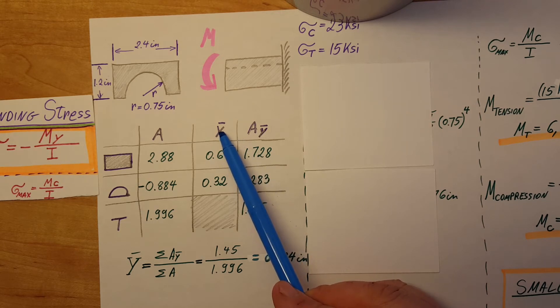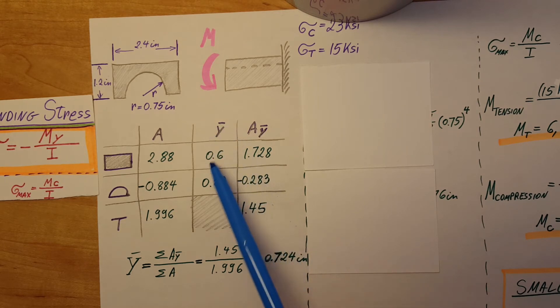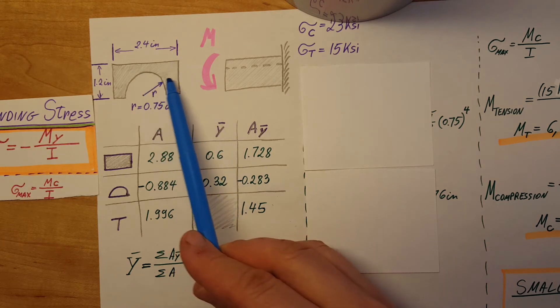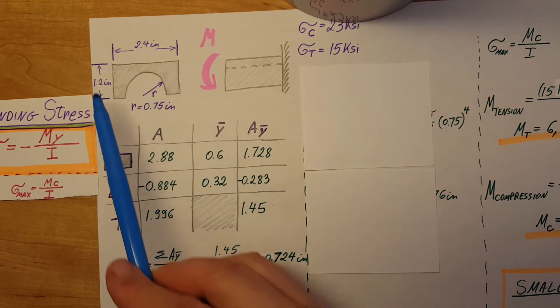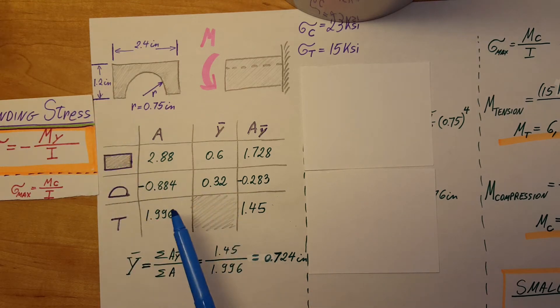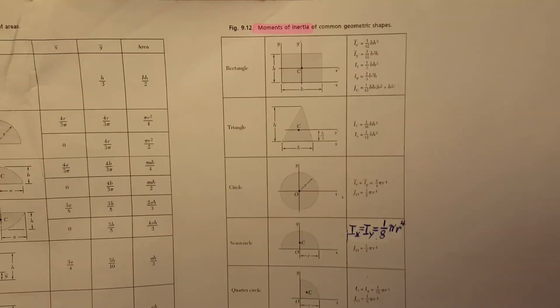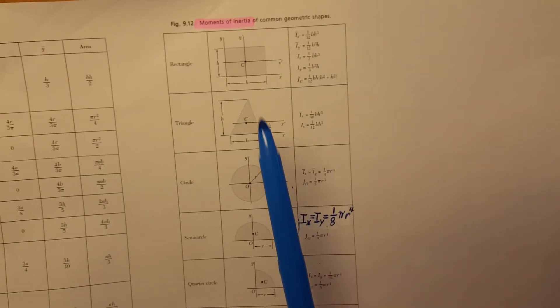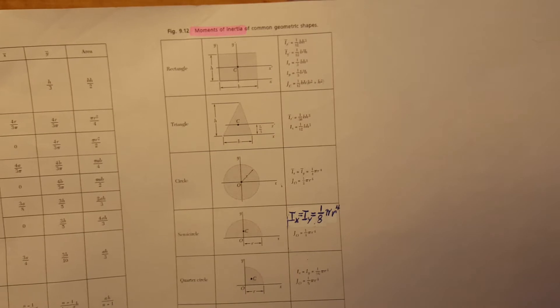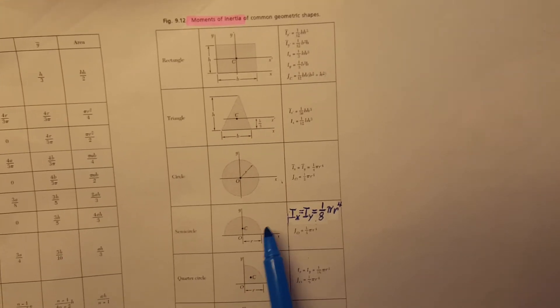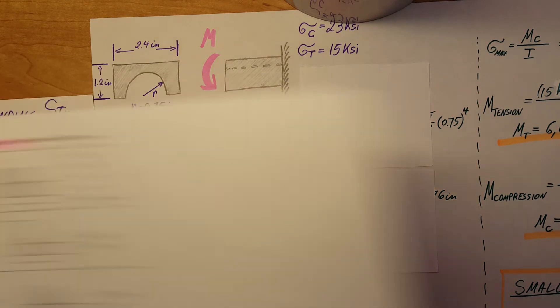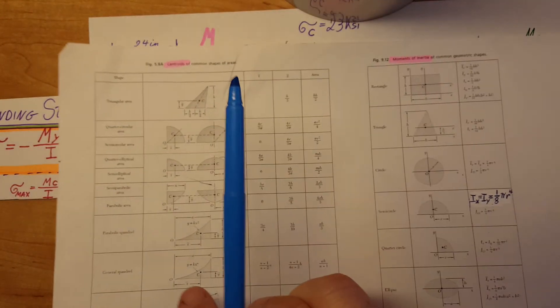Find the area for the rectangle, area for the half circle with a negative because we're cutting it out. Now the Y bar for both items. For the rectangle we know it's at the half point, so 0.6 since the height is 1.2.